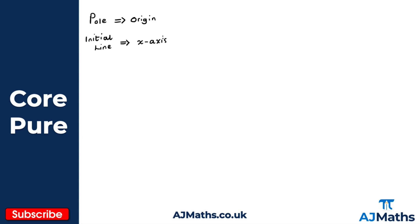Let's begin by plotting a point with Cartesian coordinates. We have the y-axis and the x-axis. Let's say I'm going to plot the point (x, y) — that's there. This is the point (x, y): we're x units along and y units up.